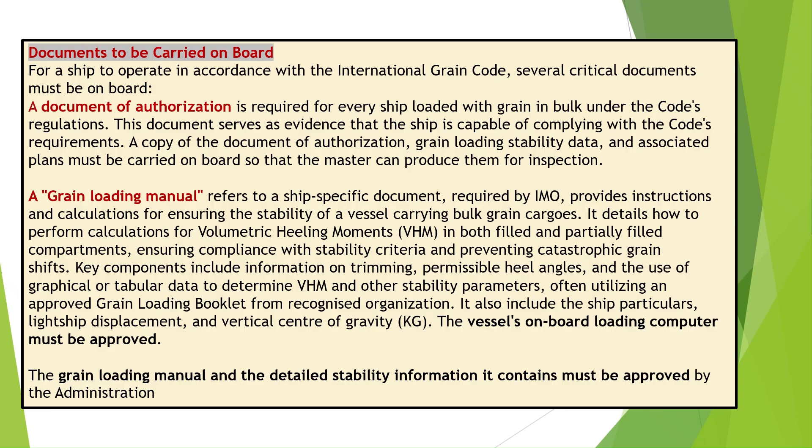Key components of the grain loading manual include information on trimming, permissible heel angles, and the use of graphical or tabular data to determine VHM and other stability parameters, often utilizing an approved grain loading booklet from a recognized organization. It also includes ship particulars, lightship displacement, and vertical center of gravity, KG. The vessel's onboard loading computer must be approved, and the grain loading manual and the detailed stability information it contains must be approved by the administration.